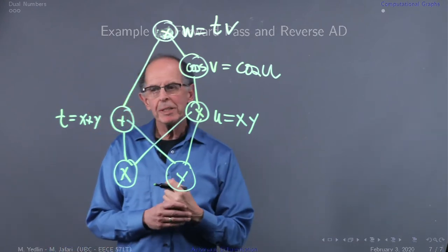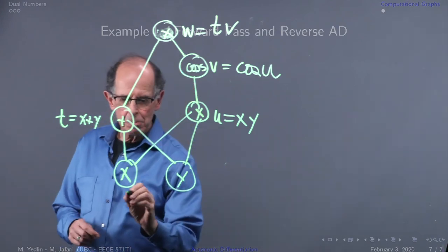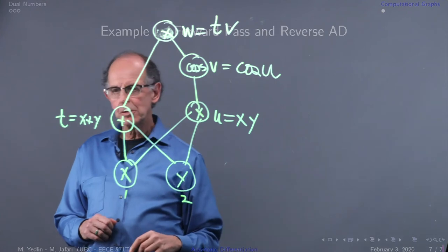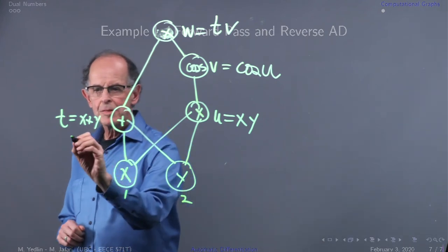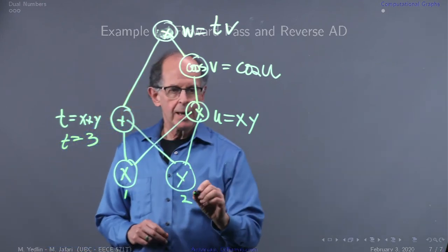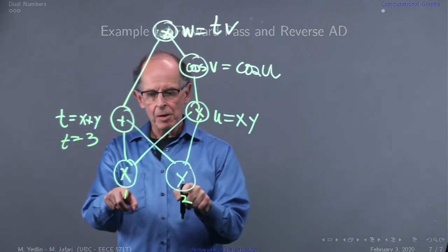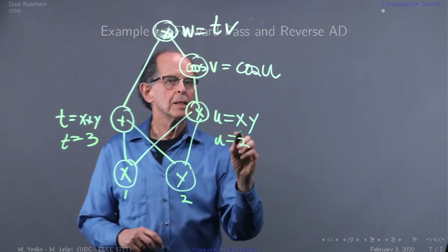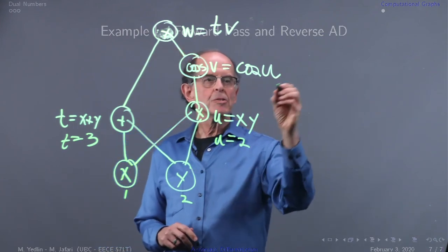Now let's put in some numbers. Let x equal one and y equals two. Then t equals three, and over here we have one times two, so u equals two.